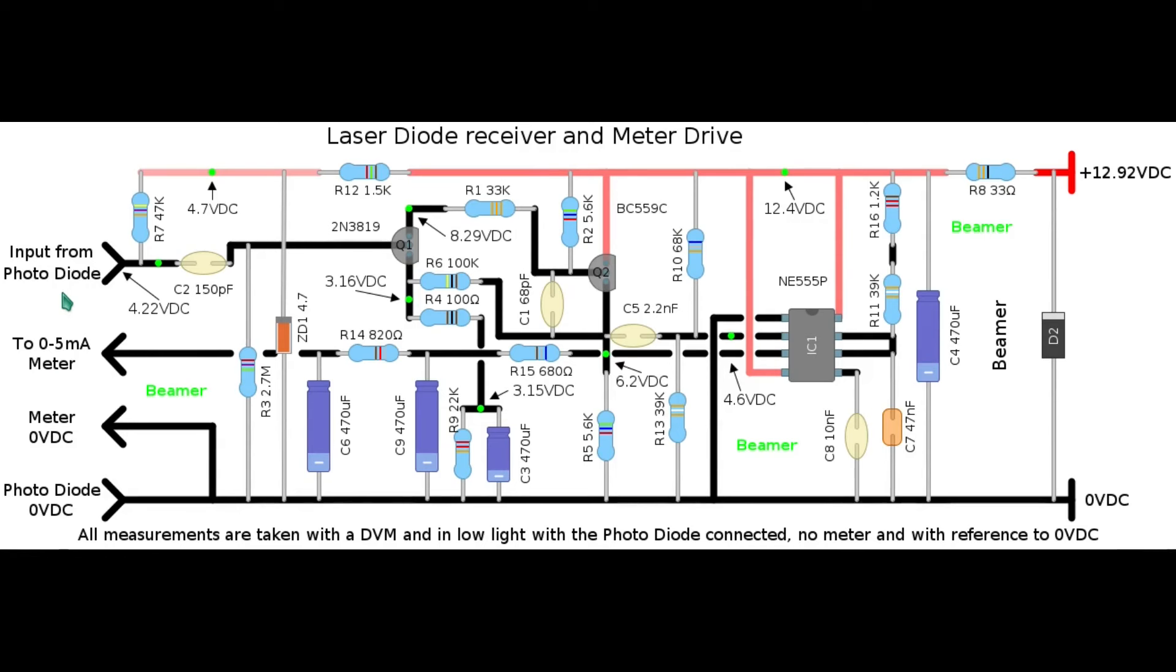So firstly we have an input from the photodiode through this capacitor C2 into a high gain amplifier with Q1 and Q2. This then triggers a monostable multivibrator of the 555. The output of which goes into a low pass second order filter. And then finally output to a 0 to 5 milliamp moving coil meter.